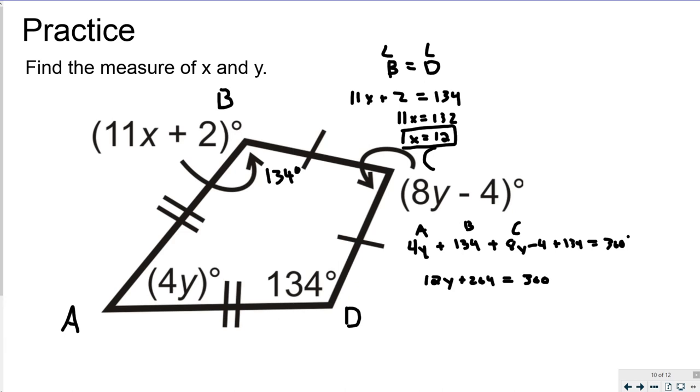So then we're going to subtract 264 from both sides to get 12Y, equals 96, divided by 12Y, equals 8. So then we have Y equals 8 to go with X of 12.